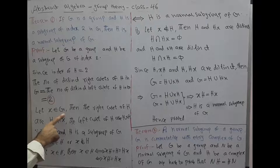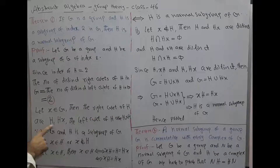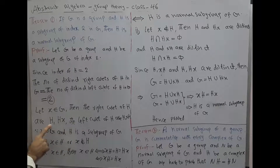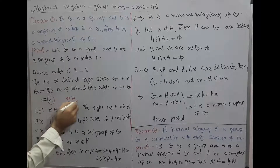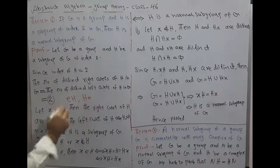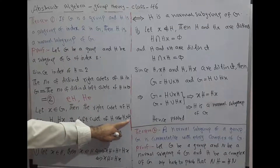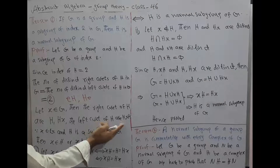Let X belong to G. Then the right cosets of H are H and HX, and the left cosets of H are H and XH. H itself counts as both a left coset and a right coset, since we can write it as eH or He.